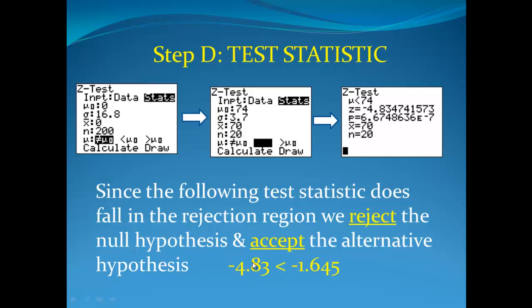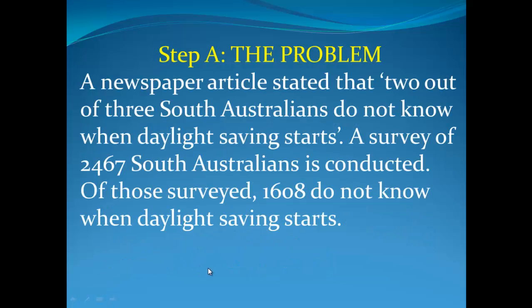So if that falls inside our rejection region, we have to reject the null hypothesis and we have to accept the alternative hypothesis. In that particular case, then, we can make a claim that we accept the fact that exercise has, in fact, reduced our heart rate. Second problem — the previous one we did was using our mean value. The second one is going to be looking for a proportion.